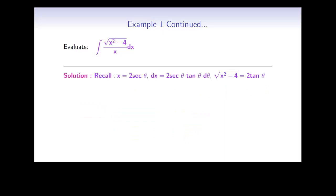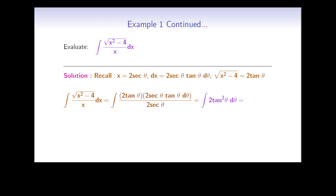To summarize: we made the substitution x equals 2 secant theta, so dx equals 2 secant theta tan theta dθ, and we found that the square root of x² minus 4 equals 2 tan theta. Inserting all of this into the original integral, the square root of x² minus 4 becomes 2 tan theta, x in the denominator becomes 2 secant theta, and dx becomes 2 secant theta tan theta dθ. Simplifying by canceling 2 secant theta, we're left with 2 tan² theta dθ.